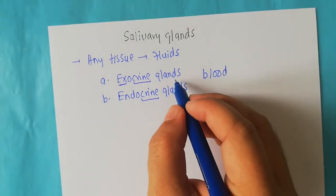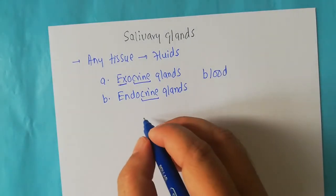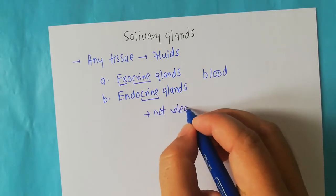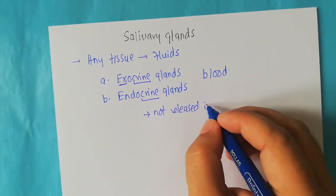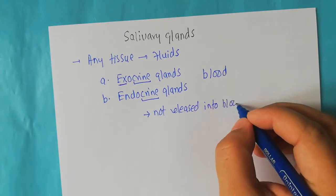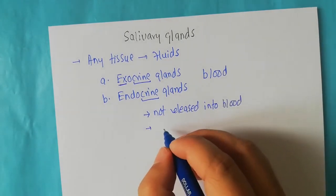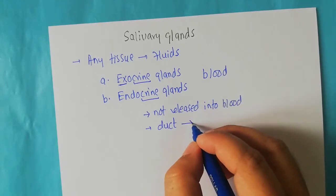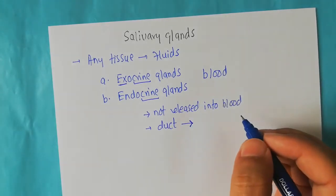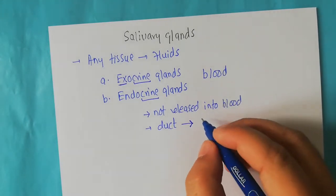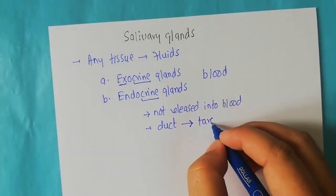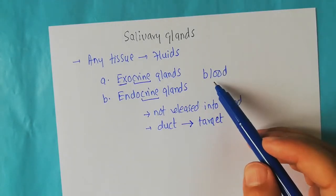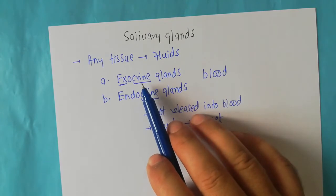The fluids released by exocrine glands are not released into the blood. Instead, they are released into specialized ducts. These exocrine glands have a duct system, and utilizing these ducts they communicate their secretions to their targets. Because they are not releasing fluids into the blood, they are known as exocrine glands.